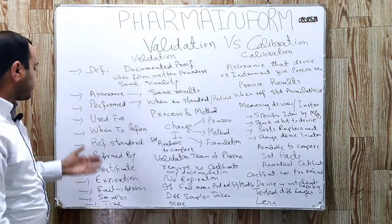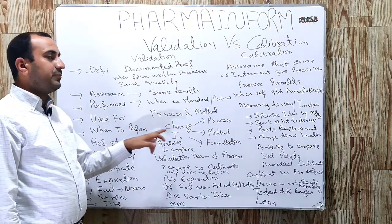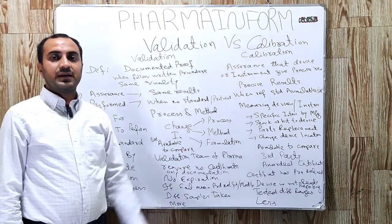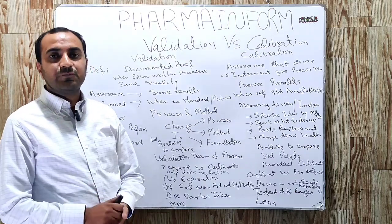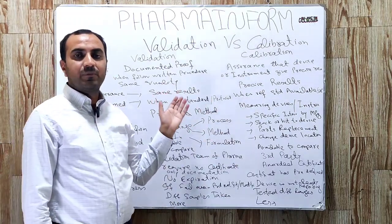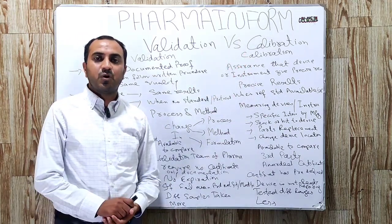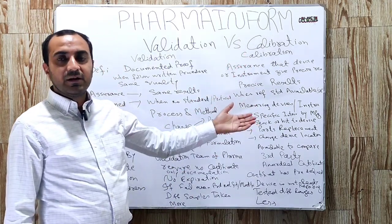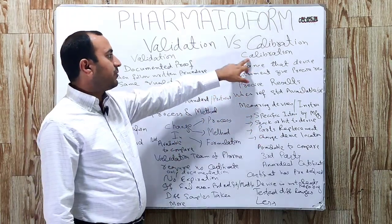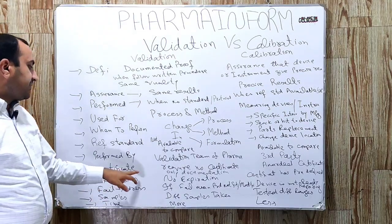Regarding who performs each activity: validation is performed by the validation team of the pharmaceutical industry. Calibration is performed by a third party — a vendor who comes from outside and performs the calibration activity.